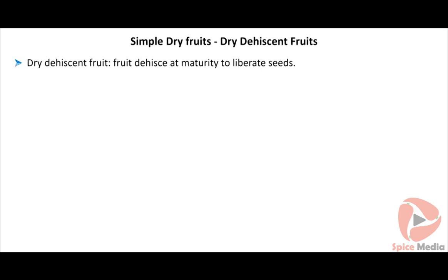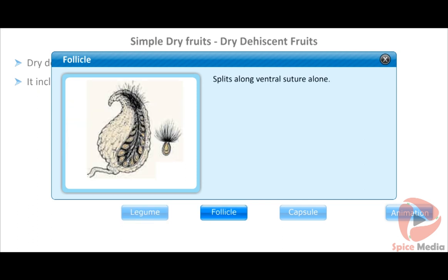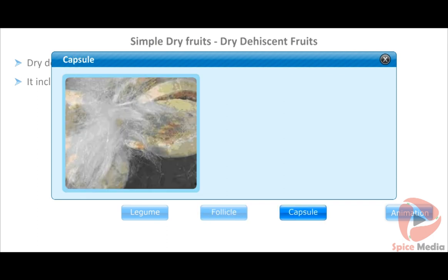Dry dehiscent fruits dehisce at maturity to liberate seeds; they include legume, follicle, and capsule. The legume develops from a monocarpellary unilocular superior ovary with marginal placentation; the pericarp dehisces along both dorsal and ventral sutures. Example: pea and bean. The follicle is like a legume but the pericarp dehisces along one suture only — the ventral suture. Example: Calotropis.